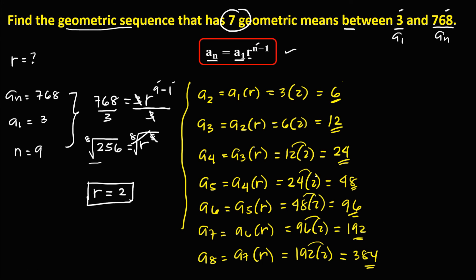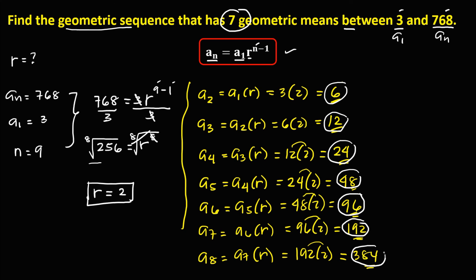So these are the 7 geometric means between 3 and 768: 6, 12, 24, 48, 96, 192, and 384.